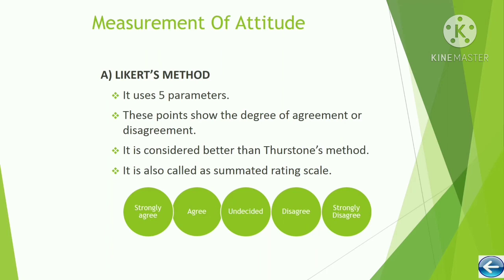Measurement of attitude — the Likert scale method: it has five parameters — strongly agree, agree, undecided (neutral), disagree, and strongly disagree.